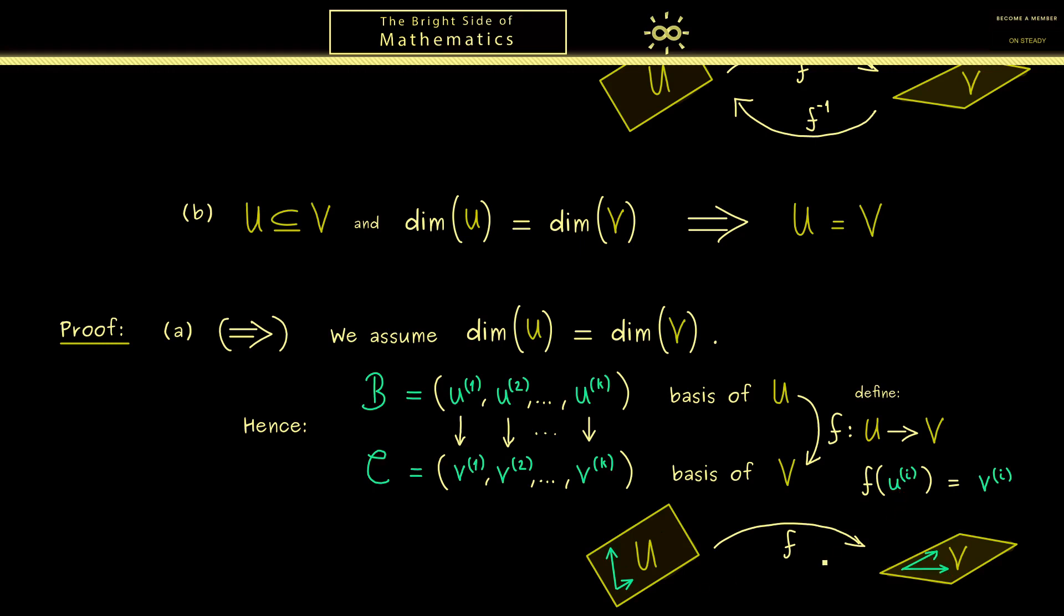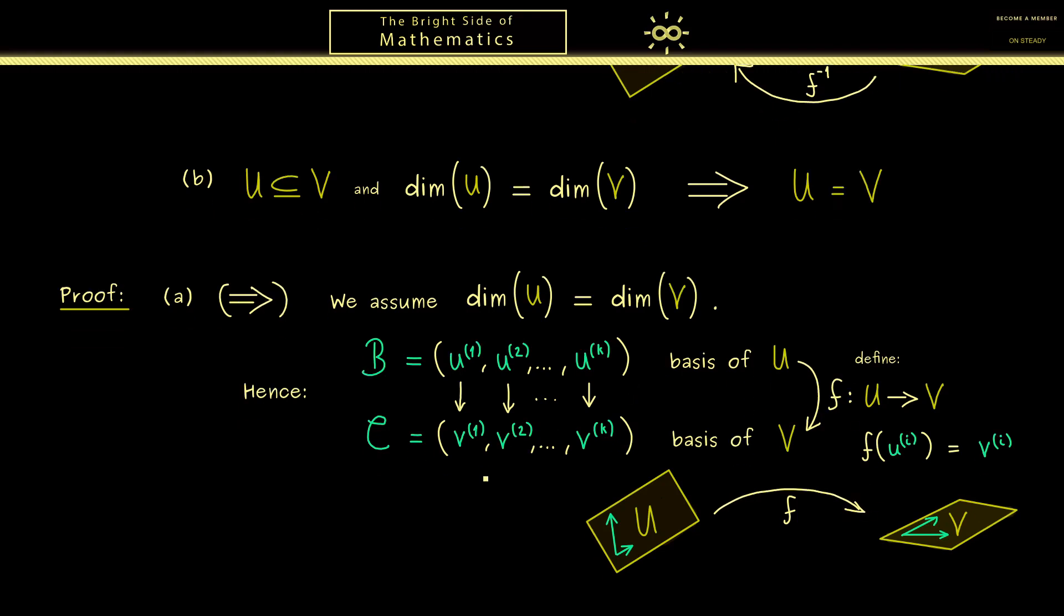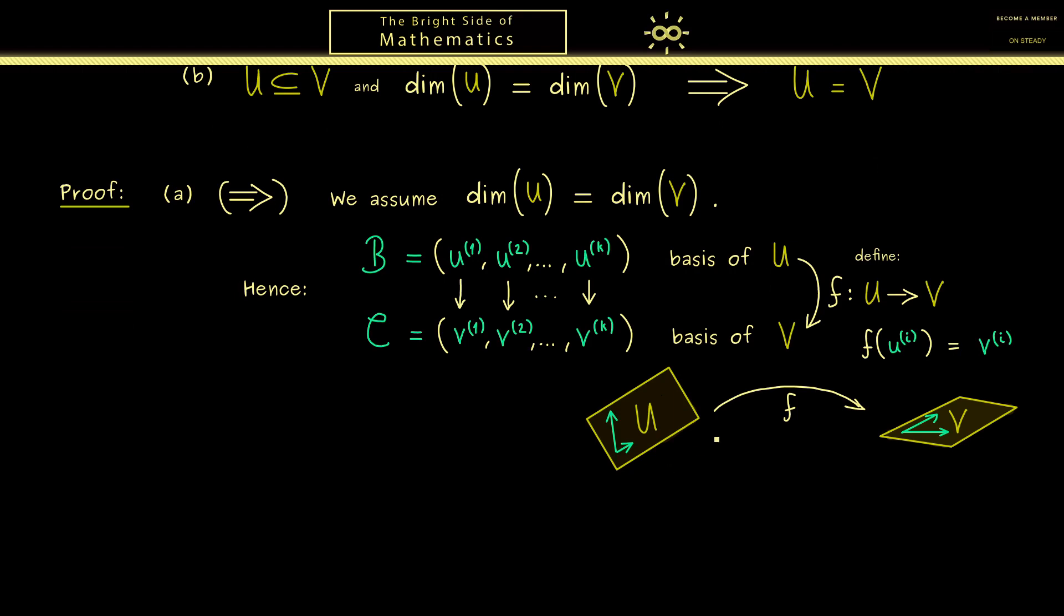However we know as a basis it spans the whole space on the left hand side and also the whole space on the right hand side. Ok now in order to see that the map is completely determined now let's write it down for an arbitrary vector in U. Hence let's call this vector simply X and then we consider F of X.